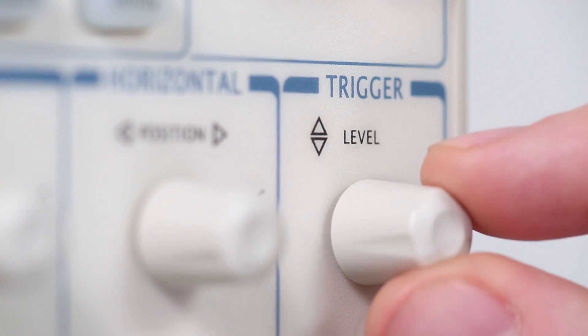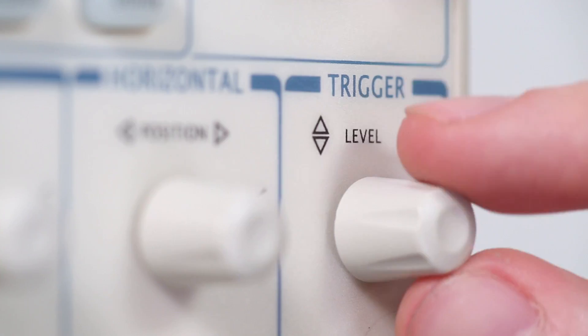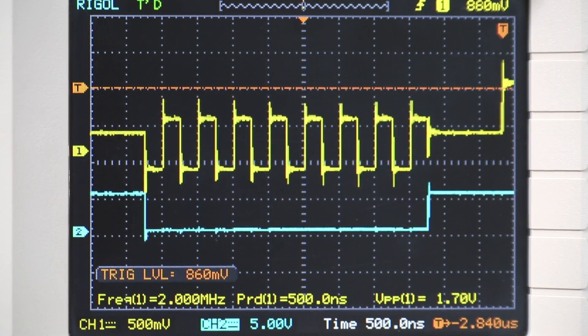If the waveform appears unstable, I can change the point at which it begins sampling the signal by using the scope's trigger settings.